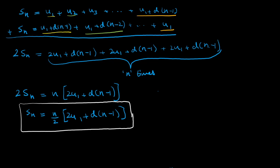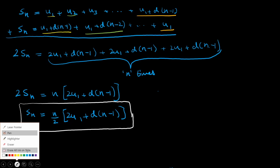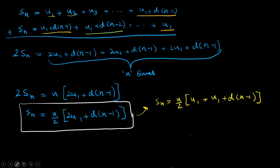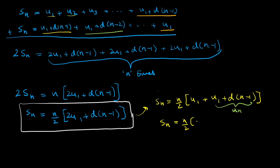There's one more formula in the data booklet. We can manipulate the first formula by breaking 2u1 into u1 plus u1 plus d into n minus 1. The highlighted portion u1 plus d into n minus 1 is nothing but the nth term, which we used in the last video. So we can rewrite the formula as Sn equals n by 2 into u1 plus un. That's our second formula, and that's basically it.